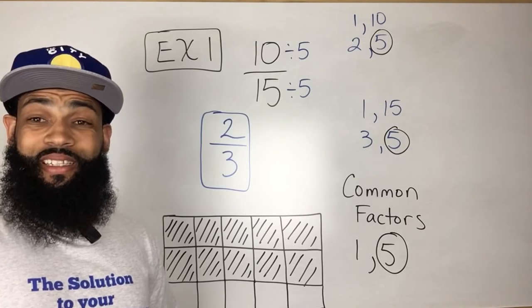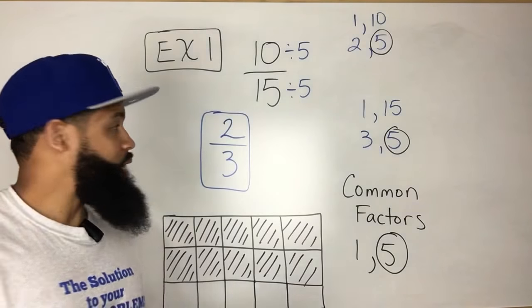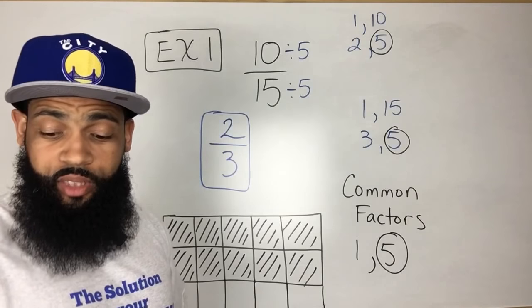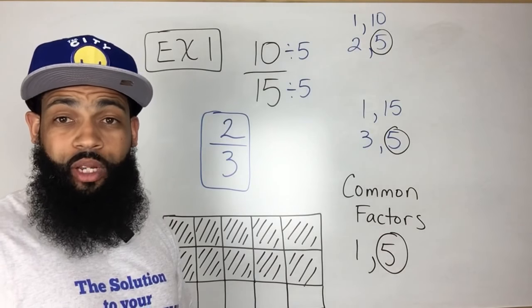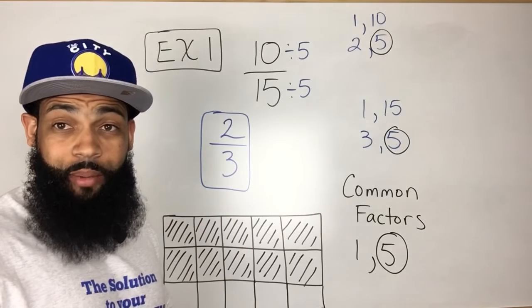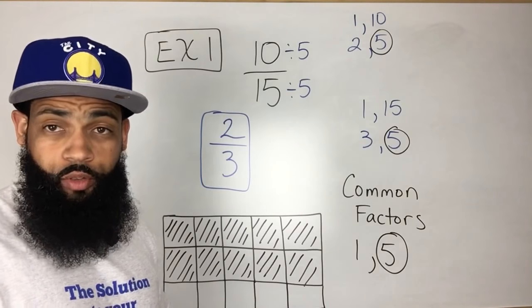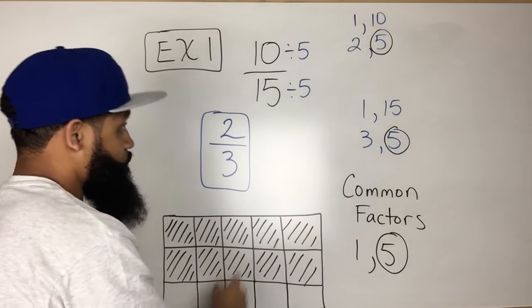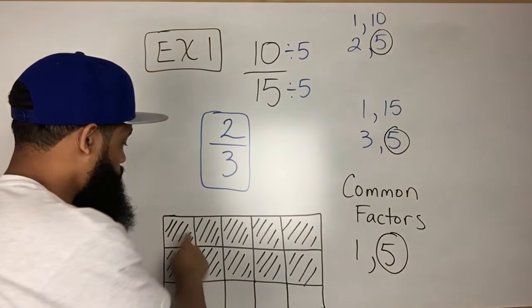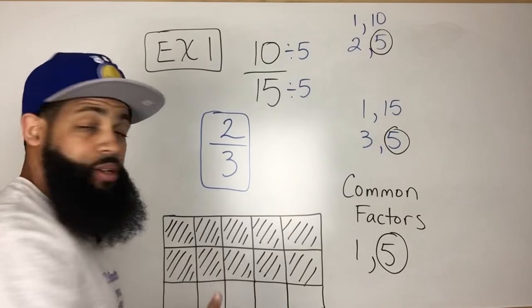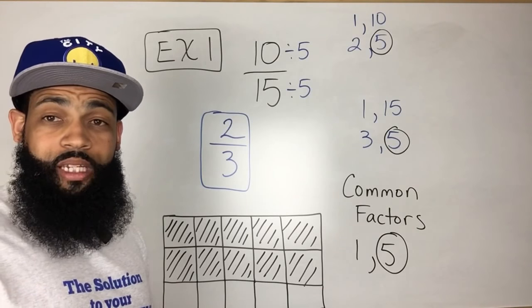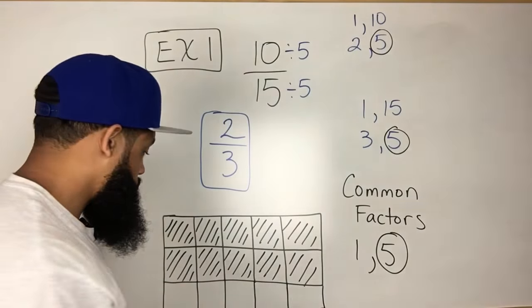Now, I want to take this and I want to show that 2 thirds has the same value as 10 over 15. Well, I'm going to overlap those with a different color. So let's say 2 out of 3. Remember, the denominator represents the total number of parts. So in this case, there's 15 total parts and that would be each little individual square. And we've colored in or shaded 10 out of the 15 squares. So we want to take this and we want to make it 3 total parts.